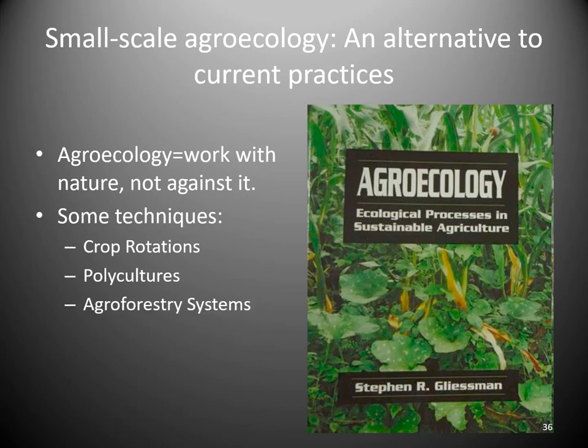Agroforestry systems involve planting trees together with your annual crops or animals, allowing these different components of the ecosystem to complement one another. Crops don't need full sunlight, so they can be planted under trees and still grow well. It breaks up fields so you don't have the same stand of one crop in the same place all the time. More diverse systems are naturally more resilient. Animals eating the grass, defecating, and fertilizing the grass allows it to grow, capture more sunlight, and create more biomass to feed the animals.